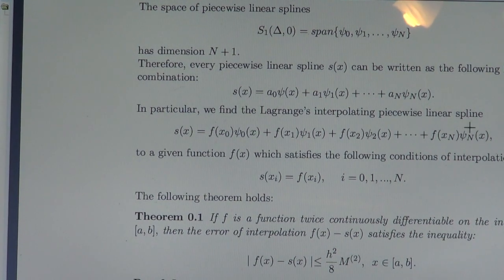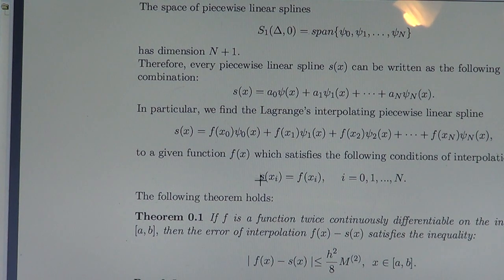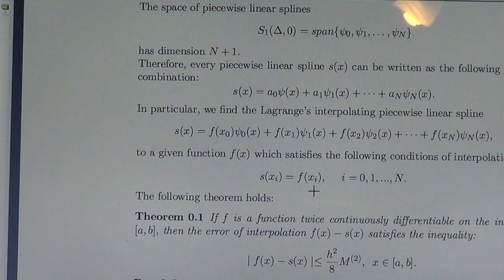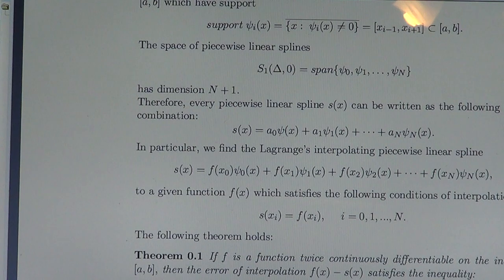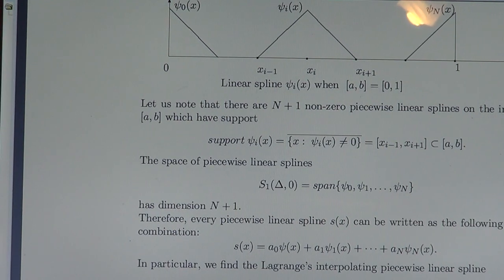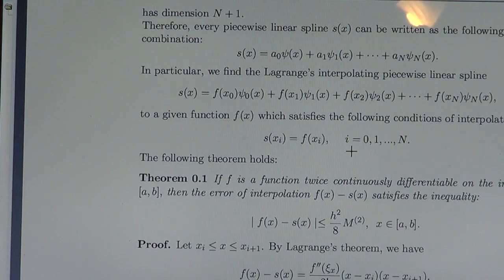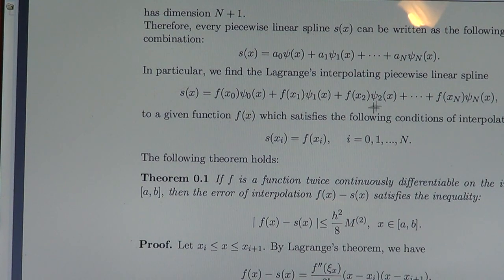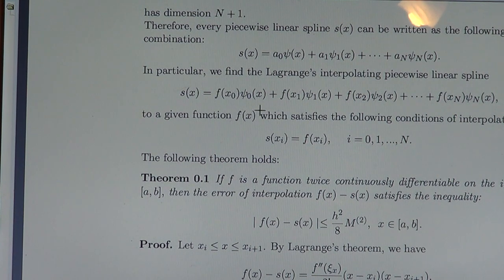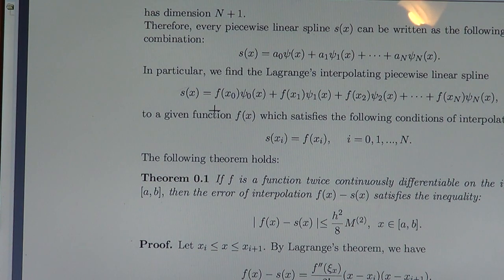In particular, we find the Lagrange interpolating piecewise linear splines — the one which satisfies the Lagrange interpolating conditions: s(x_i) equals the value of the function f at x_i. Indeed, if x equals x_0, then ψ_0 is 1 as we see on the graph, and all other values ψ_1, ..., ψ_n are 0 at x_0. Similarly, at x_1, ψ_1 equals 1 but all others are 0. So the Lagrange interpolating piecewise linear spline is a linear combination of the Ritz-Galerkin coordinates with the values of the function as coefficients.